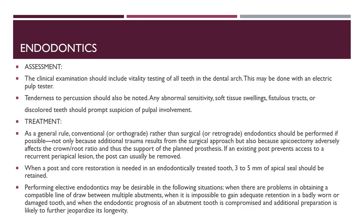Coming to endodontics. Clinical examination should be done for vital teeth using the electric pulp tester. Tenderness to percussion can be used; any abnormal swelling, fistulas, or discoloration should be noted. As a general rule, conventional orthograde rather than surgical endodontics should be preferred if possible. When a post and core restoration is needed in an endodontically treated tooth, 3 to 5 mm of apical seal should be retained. Performing elective endodontics may be desirable when there is a problem obtaining a compatible path of draw between multiple abutments, or when it is impossible to gain adequate retention in a badly worn or damaged tooth.